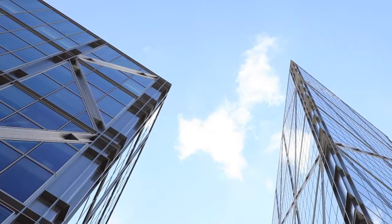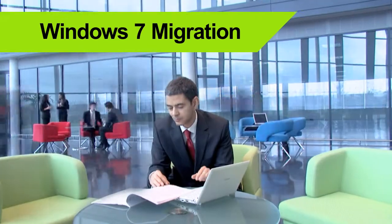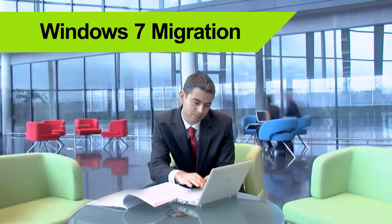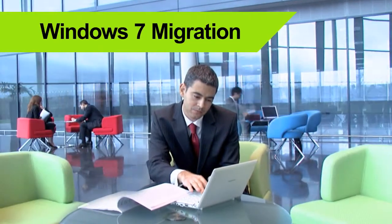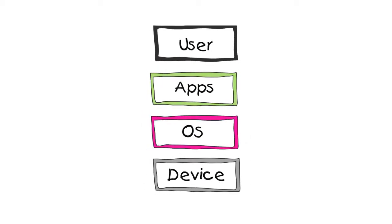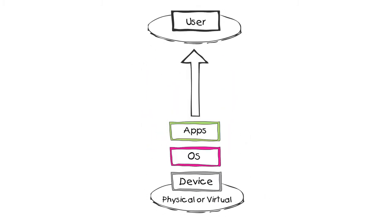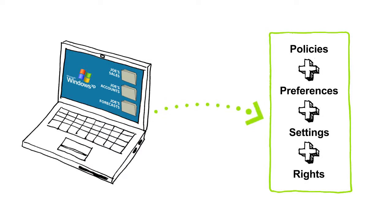AppSense helps businesses migrate to Windows 7 more quickly and at lower cost by managing the most complex part of the desktop: the user. AppSense decouples all user information from the existing physical machine for centralized management and deployment.